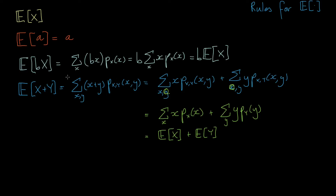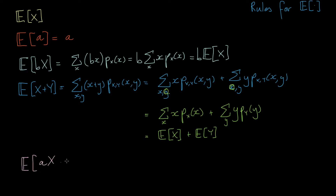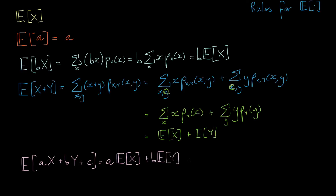To wrap up, we write one big formula capturing all these identities. Starting with E[ax + by + c], we can separate this as E[ax] + E[by] + E[c], and simplify one step further to a·E[x] + b·E[y] + c. Combining all the rules we've covered, we can transform this relatively messy expression into a linear combination of the expected values of x and y plus a constant.